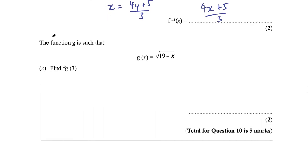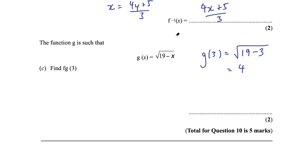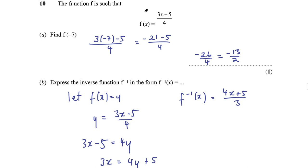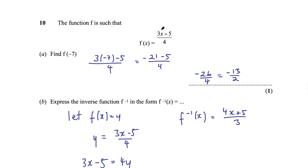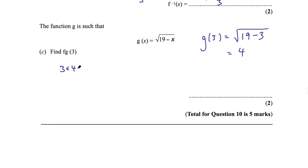Part C: g(x) = √(19 − x). Find fg(3). First find g(3): √(19 − 3) = √16 = 4. Then find f(4): (3 × 4 − 5)/4 = (12 − 5)/4 = 7/4. Final answer: 7/4. That was question 10 for 5 marks.